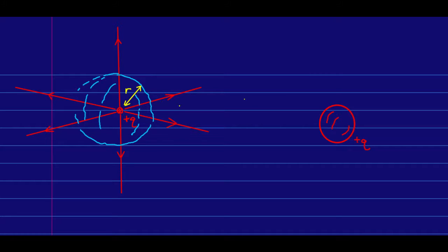But the other thing to note is that by the symmetry, by the rotational symmetry, by the reflection symmetry, we know that the E field magnitude has to be exactly the same everywhere on the surface of this sphere.